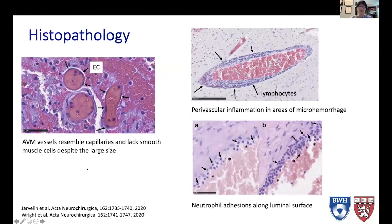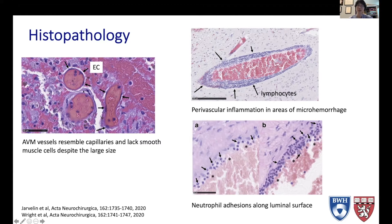In an AVM, even though we're talking about feeding arteries and draining veins and dilated vessels that are really quite large — larger than any other intracranial vessels — the architecture is basically the same as a capillary. There's an endothelial cell layer and nothing else. There's no smooth muscle cell layer, and these vessels can be several millimeters in size — really huge vessels.